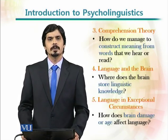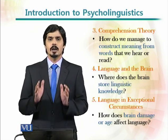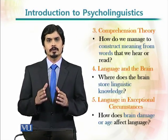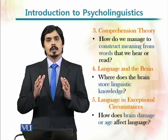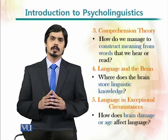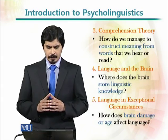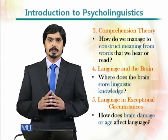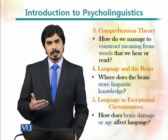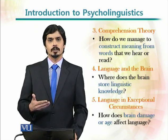Psycholinguistics also deals with comprehension theory, which helps us understand how we can comprehend a certain piece of linguistic knowledge. The relationship between language and the brain is also discussed — where does the brain store linguistic knowledge? Language in exceptional circumstances is another area; for example, how aging or some kind of impairment affects the linguistic knowledge of an individual.